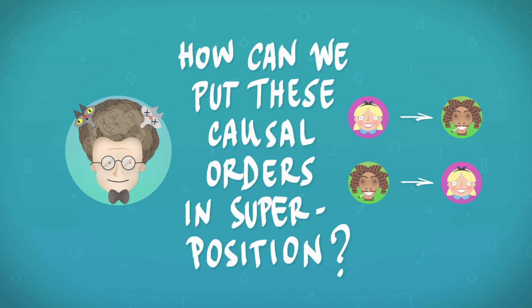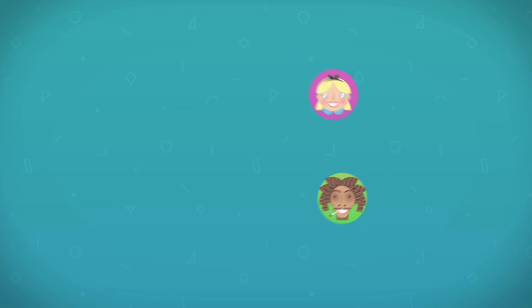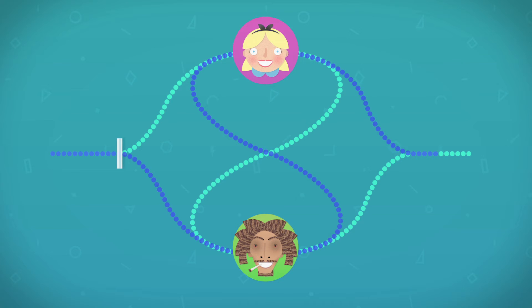How can we put these causal orders in a superposition? One way is to put Alice and Bob in an interferometer that has two paths in a superposition. One that passes first through Alice and then through Bob, and another that passes first through Bob and then through Alice. And we can, as before, prove that the causal order was in fact in a superposition by using interference.